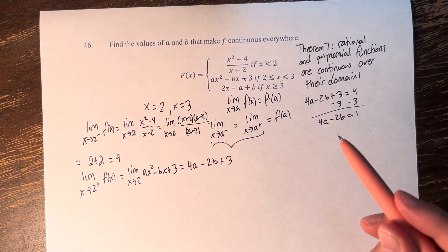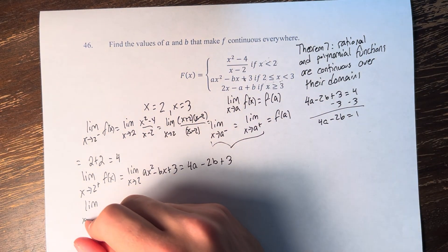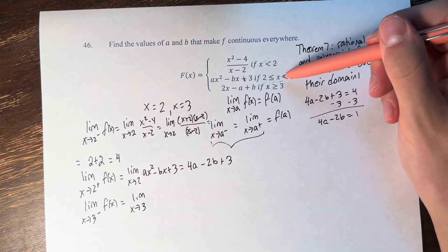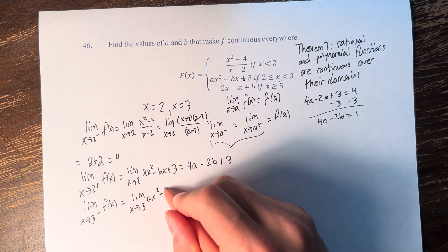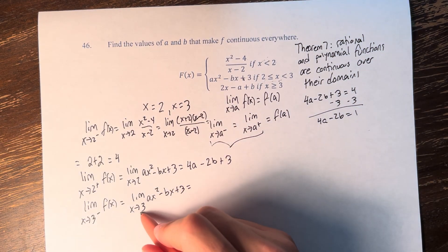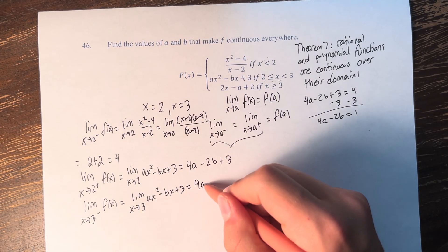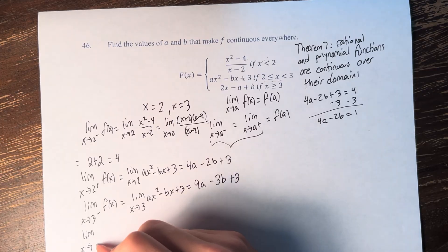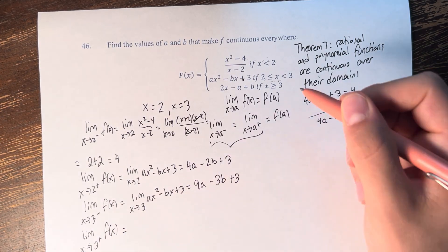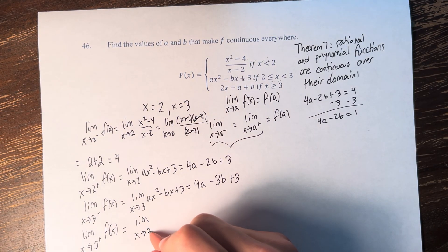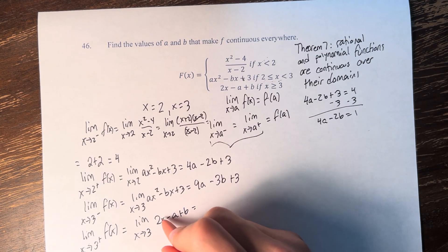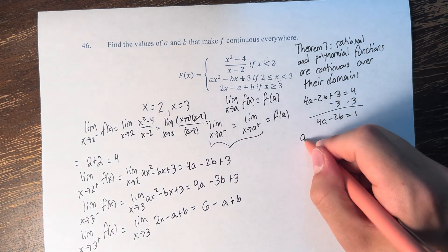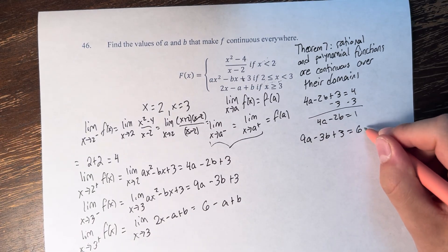Now we check continuity at x equals 3. The limit as x approaches 3 from the left uses ax squared minus bx plus 3. Plugging in 3 gives 9a minus 3b plus 3. The limit as x approaches 3 from the right uses 2x minus a plus b, giving 2 times 3 minus a plus b, which is 6 minus a plus b.